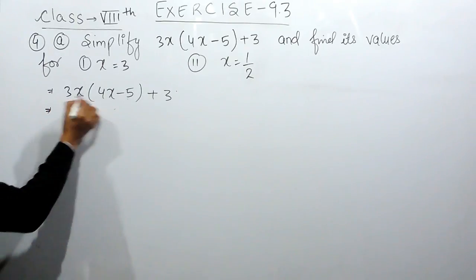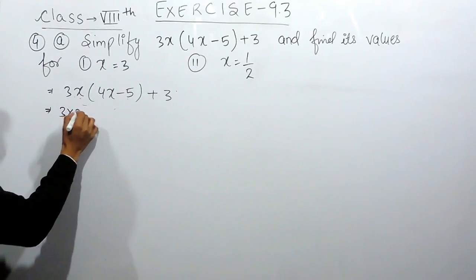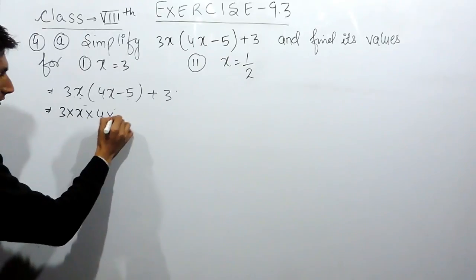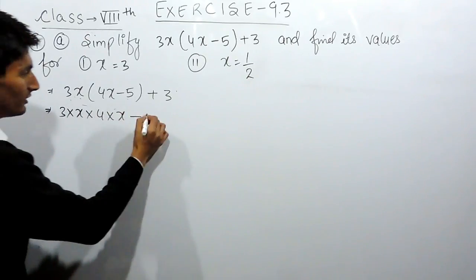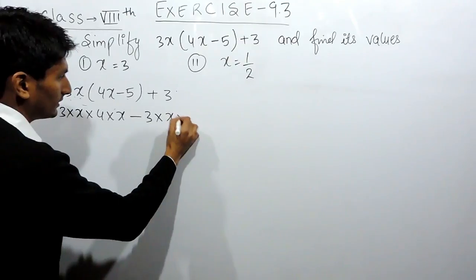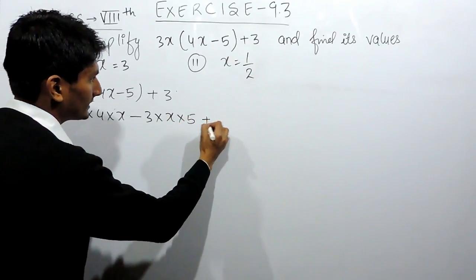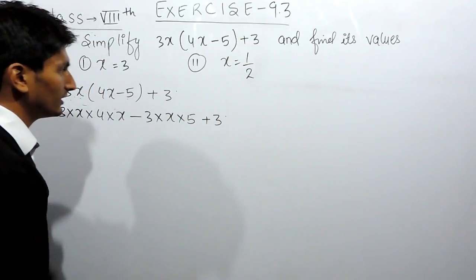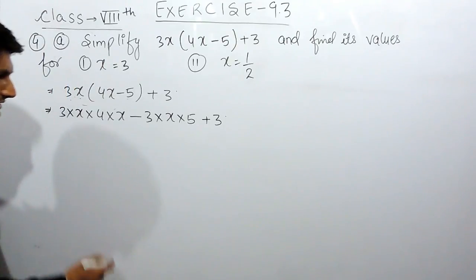For that, 3x is multiplied by 4x, and after that, minus 3x will be multiplied by 5 and the remaining thing which is plus 3 will remain as it is.